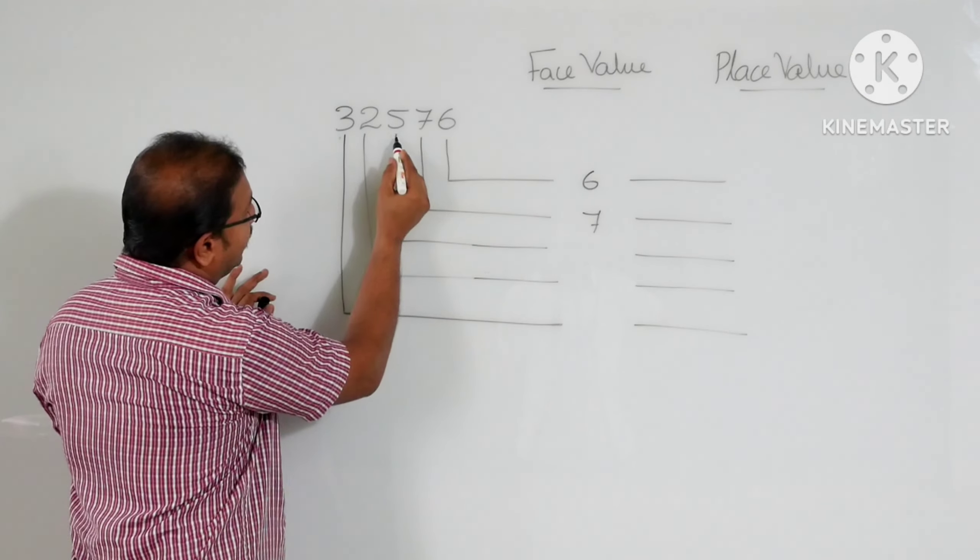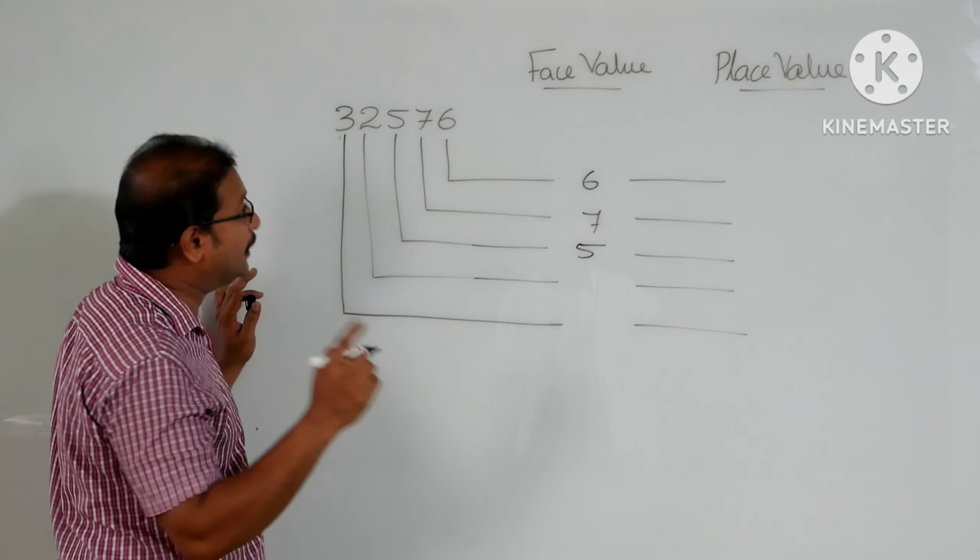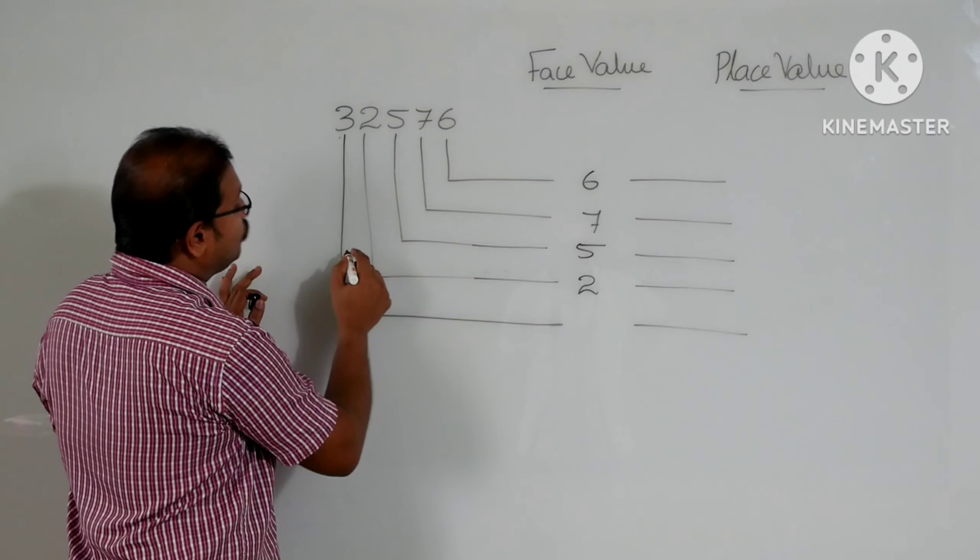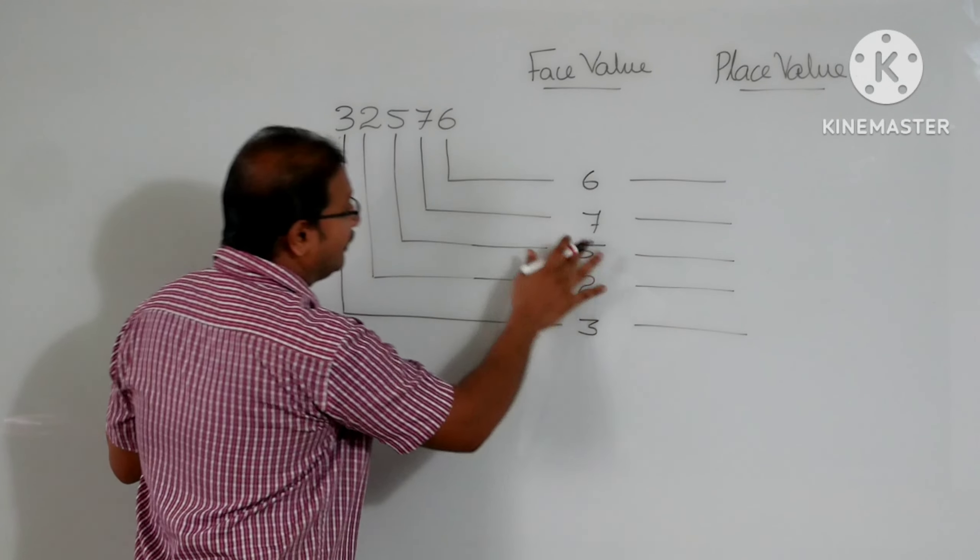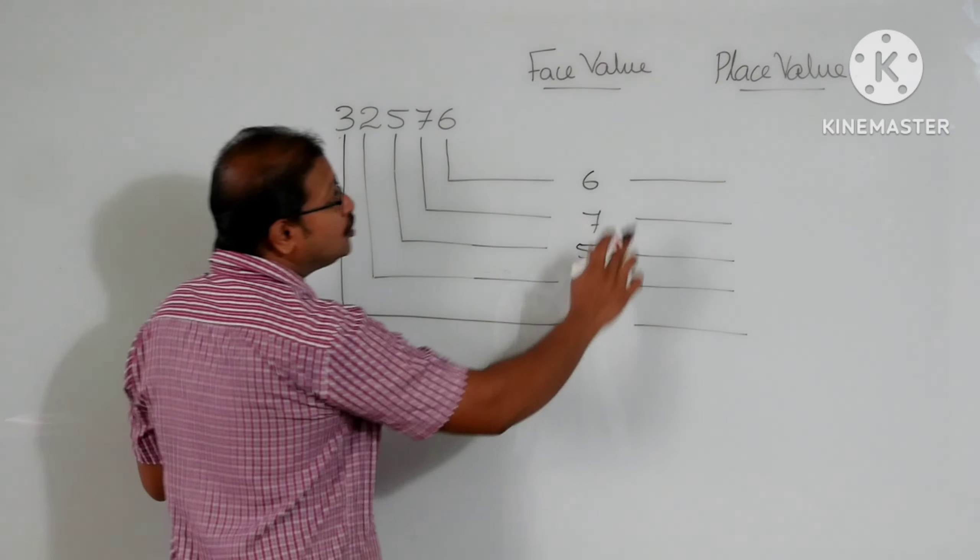Now 5, this 5 is the face value. Here in this number, 2 is the face value. Here for 3, 3 is the face value. Direct what you see, the digit, that is called the face value. Once it goes to place value,